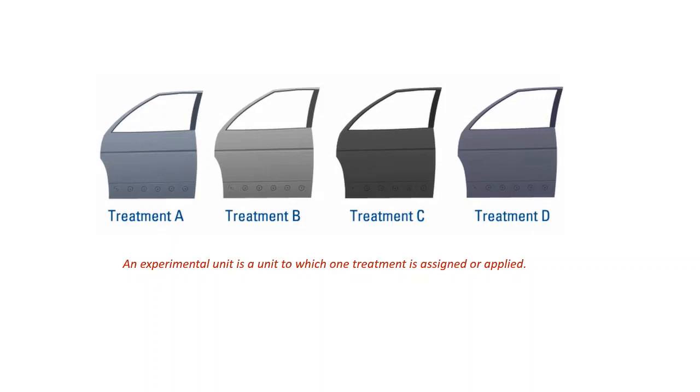In a design experiment, treatments are randomly assigned to experimental units. An experimental unit is a unit to which one treatment is assigned or applied. In the paint adhesion experiment, the treatments are a combination of the primer type and pressures. The experimental units are the metal samples that will be painted and tested for adhesion.